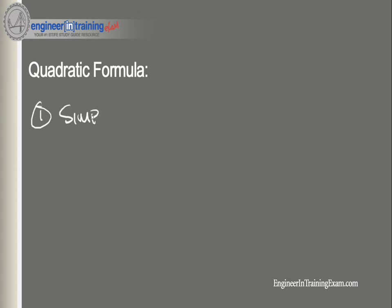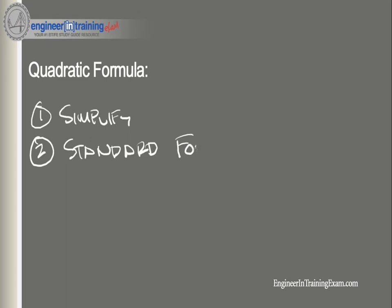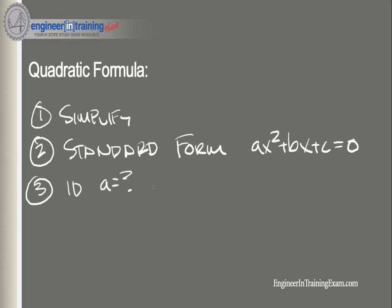Just like the factoring method, step one is to simplify — get rid of any parentheses or division and combine like terms. Step two is the same: get the equation into standard form, ax squared plus bx plus c equals zero. Step three: identify what a, b, and c are equal to.